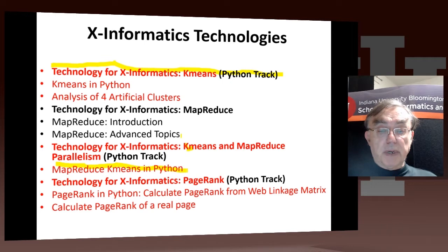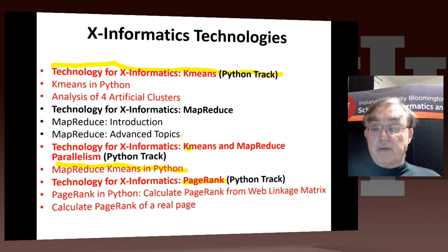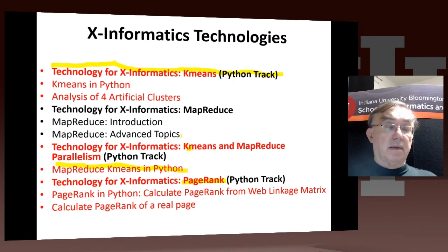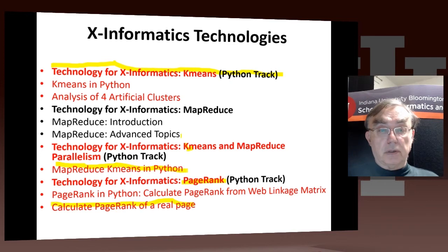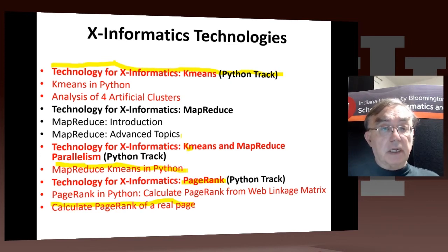Then we go to PageRank. Under PageRank, we discuss two things: actually calculating the PageRank from a matrix, with simple examples of 6x6 and 8x8 matrices, and then finding the PageRank of a real page by extracting it from the web using a Python call. So that's the end of the technologies covered for this particular course.